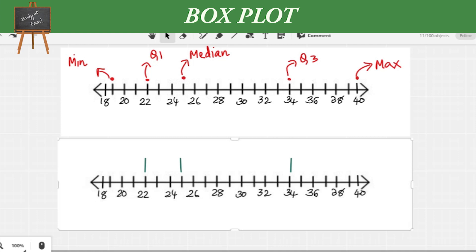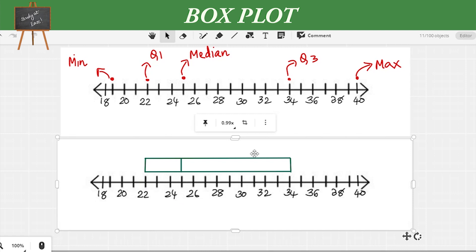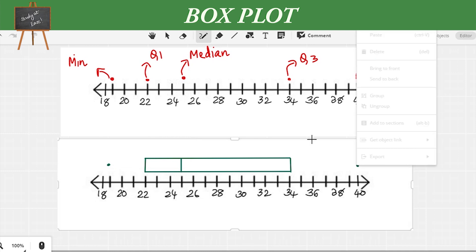We have two other values, the extreme values—minimum and maximum. At the minimum and maximum, we mark two points. From the box, draw two whiskers to join these points. The figure obtained is called a box plot.